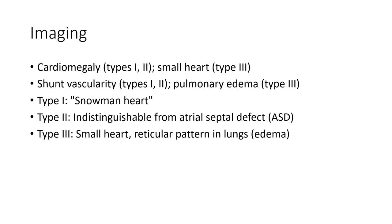Imaging findings on chest radiograph: Type 1 and Type 2 show cardiomegaly, while Type 3 shows a small heart. Vascular markings differ: Type 1 and Type 2 show increased pulmonary vascularity and pulmonary edema, while Type 3 also shows pulmonary edema. Specific radiographic signs: Type 1 shows the classic snowman heart appearance; Type 2 shows indistinct cardiac borders; Type 3 shows a small heart with reticular pattern indicating pulmonary edema.